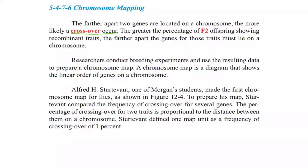About chromosome mapping: a map is a diagram showing the location of something which already exists on paper, so chromosome mapping is a diagram showing the location of genes on the chromosomes. The farther apart two genes are from one another on the same chromosome, the more likely they are to separate from each other during crossing over. The greater the percentage of F2 offspring showing recombinant traits, the more genetic diversity seen in F2 generations, and the farther apart those genes must lie on the chromosome. Researchers conduct breeding experiments and use the resulting data to prepare a chromosome map — a diagram showing the linear order of genes on a chromosome.